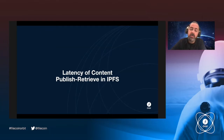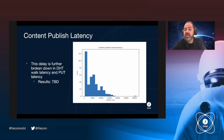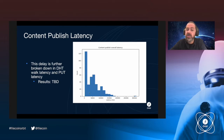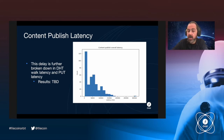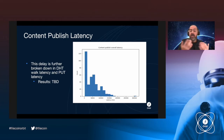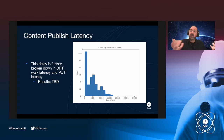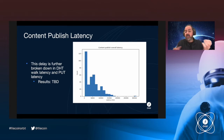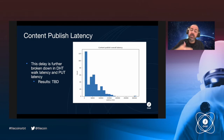Moving on to the latency of the whole cycle from publishing content to retrieving it in IPFS, we broke this down into several steps. The first is content publish time. In this graph, the y-axis is the number of items we tried to publish on the network and the x-axis is latency. This is broken down into the DHT walk latency to find the 20 peers where records need to be replicated, and the put latency where we actually put the provider record to those 20 chosen peers.